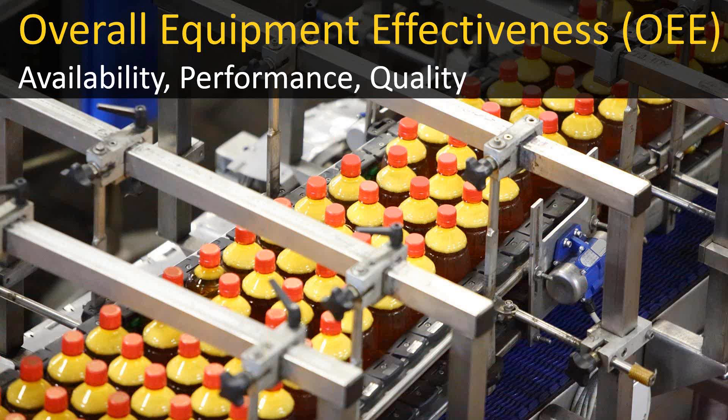The ways that manufacturing facilities measure productivity is nearly as varied as the number of manufacturing plants that exist. Certainly some are using OEE, but they've long used things like TQM — Total Quality Management — and other Japanese practices. Lean manufacturing is simply manufacturing without waste, and at the backbone of lean is JIT, or just-in-time.